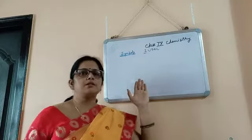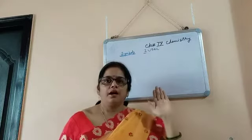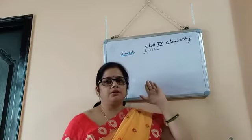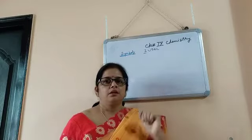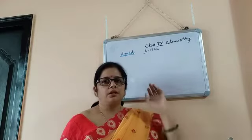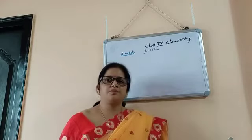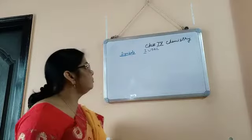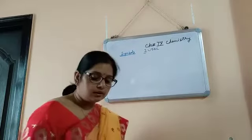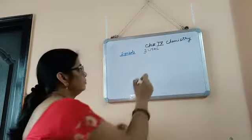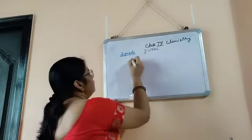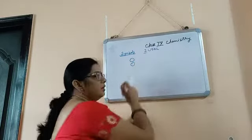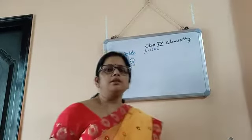In the previous class I had given an introduction about that. John Dalton was the first man who gave some symbols, like for carbon, phosphorus, and oxygen.